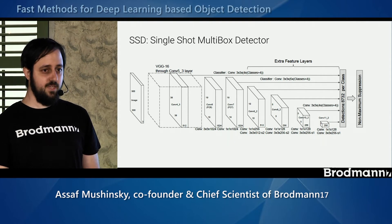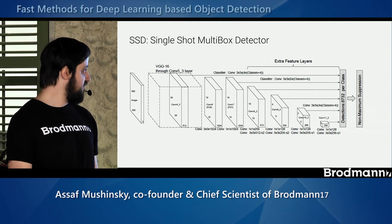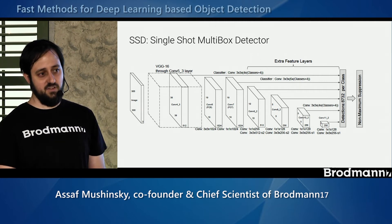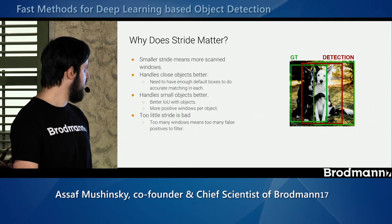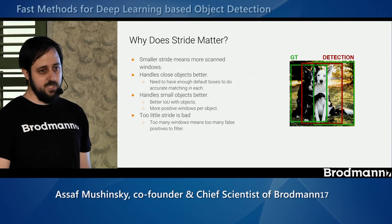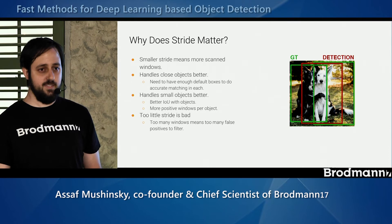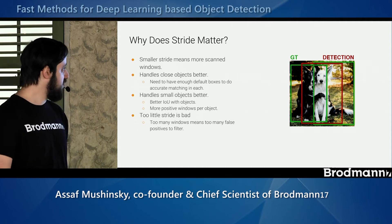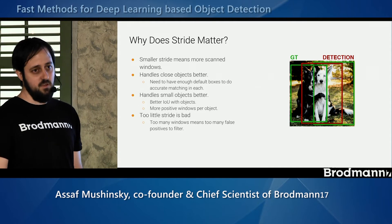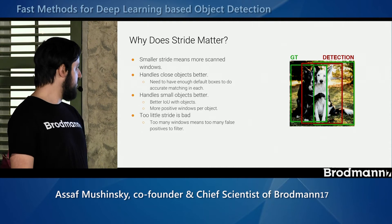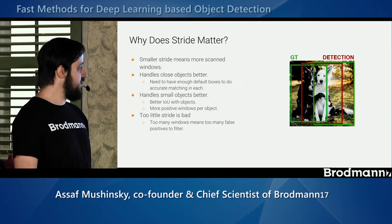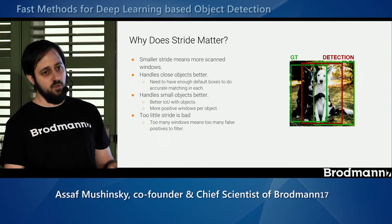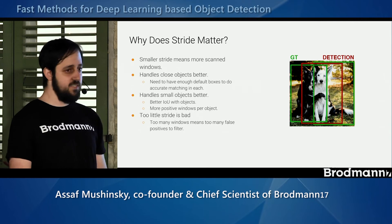The full SSD model takes VGG and adds many more layers, extracting detectors from each — generating around 9,000 detections from the entire image. Regarding stride: we could use just the finest, lowest-stride layer for detection, but this creates too many false positives. Smaller stride is needed to separate between objects that are very close together. With a large stride, only one window may overlap with both objects — the same issue applies to small objects.